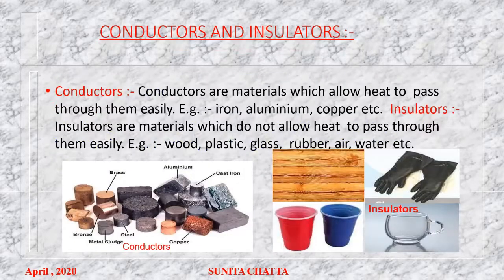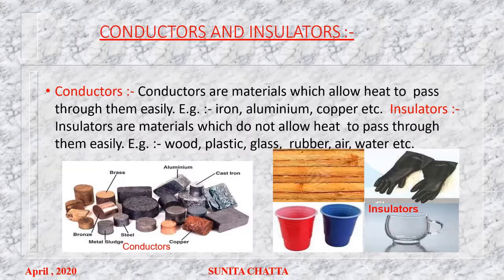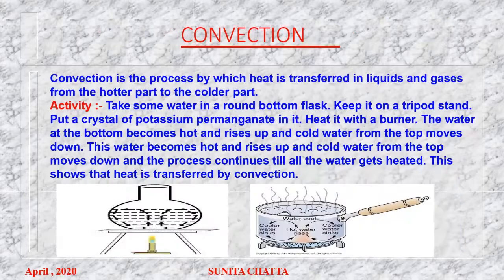Now conductors and insulators. Conductors are the materials which allow heat to pass through them easily — for example iron, aluminium, copper, etc. Insulators are the materials which do not allow heat to pass through them easily — for example wood, plastic, glass, rubber, air, water, etc.